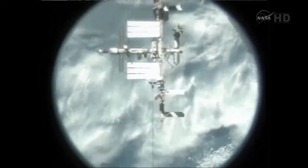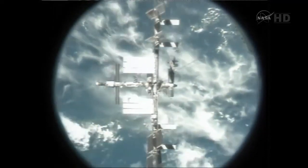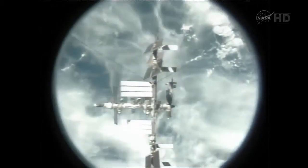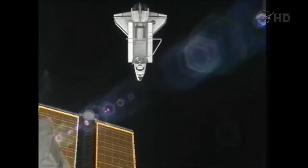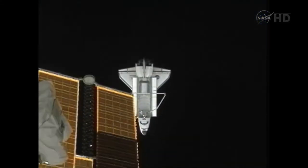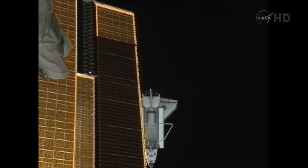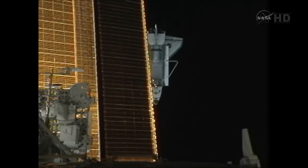Atlantis now beginning to move to a position behind the space station, maintaining a radial distance of about 685 feet or so. The fly-around going very well, and all of the space station systems looking good.